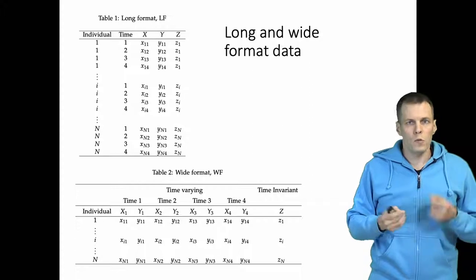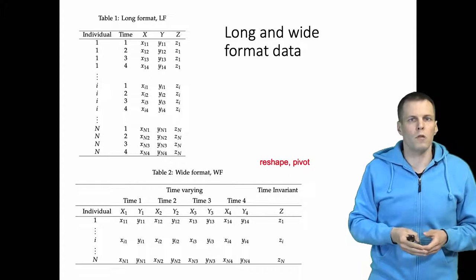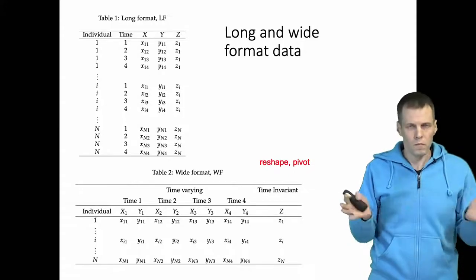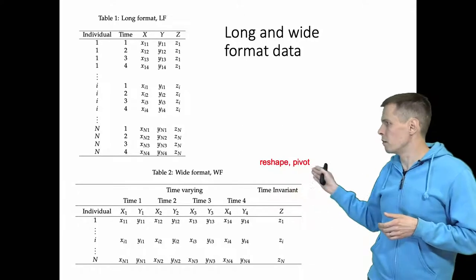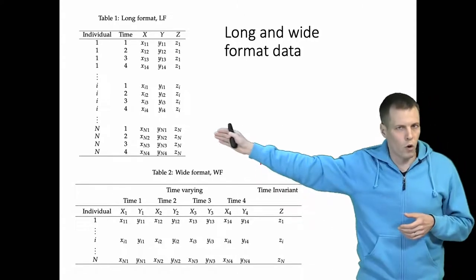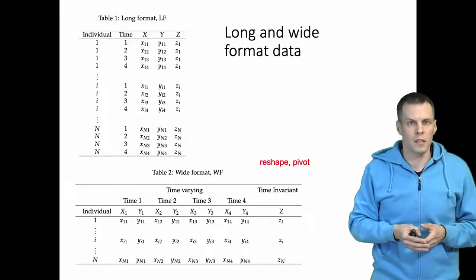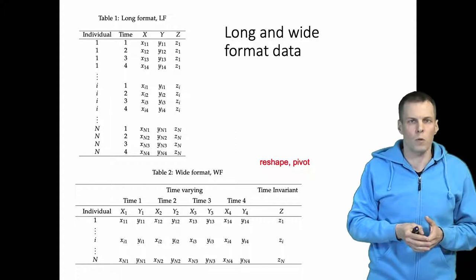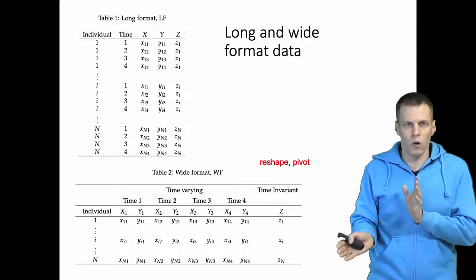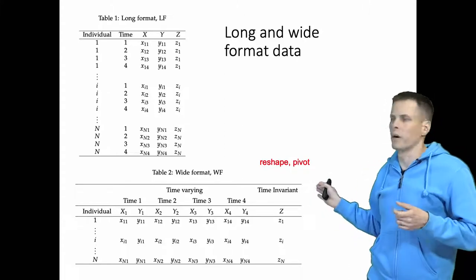To switch between these two data formats in your statistical software, you would use something called reshape or pivot. These are typically the terms used for going from wide to long and long to wide. Once you have specified how you want to reshape, going from wide to long and back is fairly straightforward — you just re-execute the same command the other way.